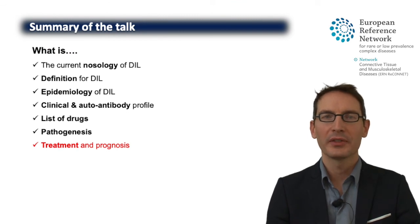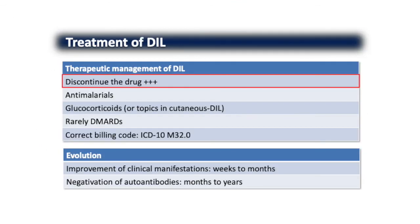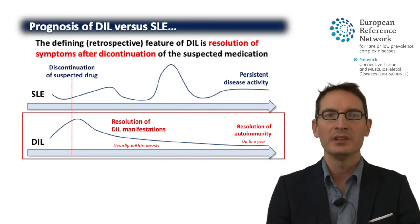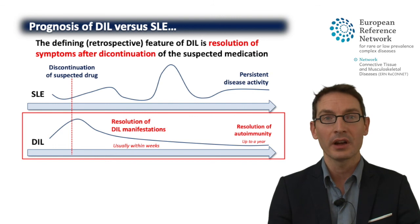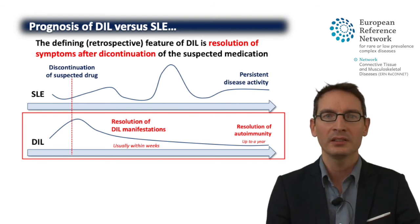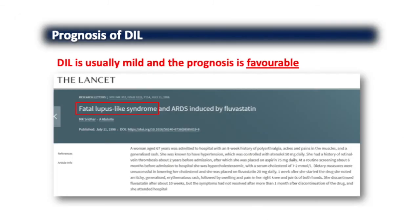Regarding treatment: since this is due to a drug, the best treatment is to stop the drug, then wait for the signs to disappear, which can take several weeks. In the meantime, we can use a short course of corticosteroids or hydroxychloroquine if needed. Clinical and laboratory manifestations will disappear within weeks, while autoimmunity will take at least one year to resolve. The prognosis of DEAL is usually favorable as these are moderately severe cases, but occasionally very severe cases including deaths have been reported.